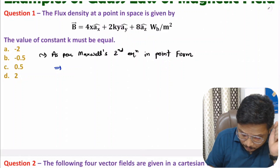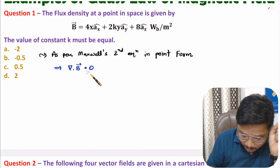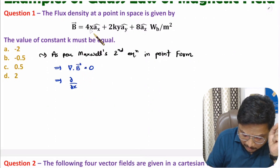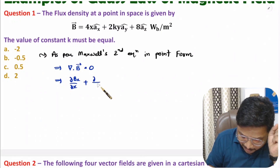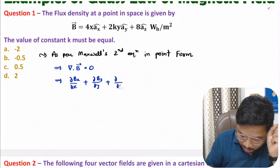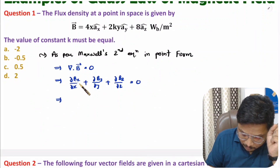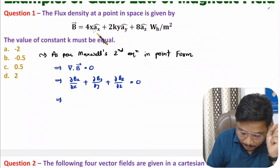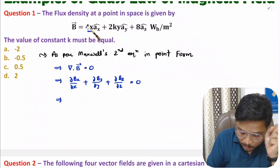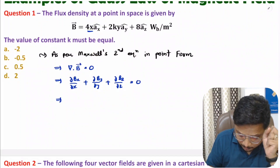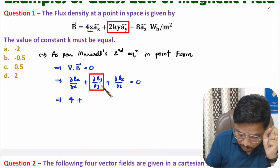As per Maxwell's second equation in point form, we can identify constant k. Divergence of magnetic field equals zero, where divergence is: del/del x of Bx, plus del/del y of By, plus del/del z of Bz, equals zero. Now we do partial differentiation of the x component: the x component is 4x, so partial differentiation of 4x with respect to x gives 4.